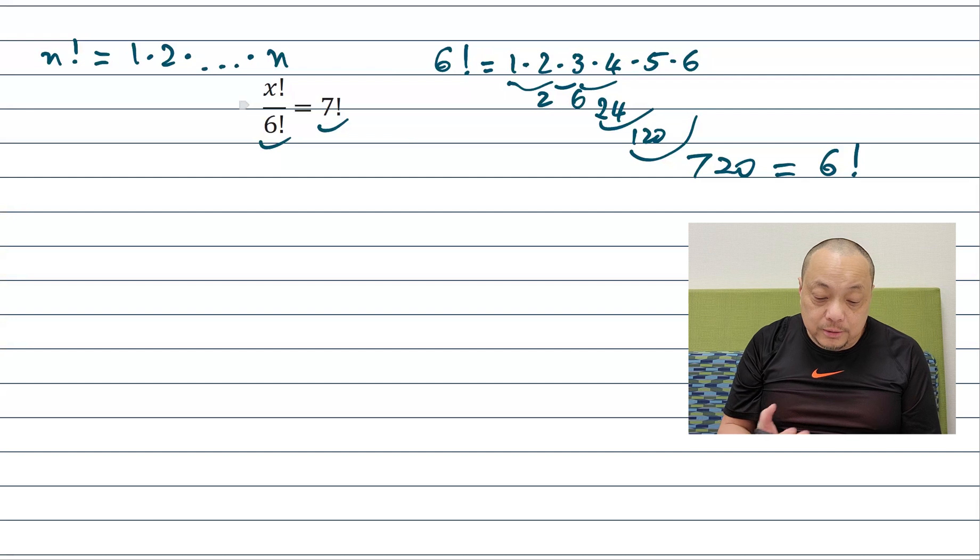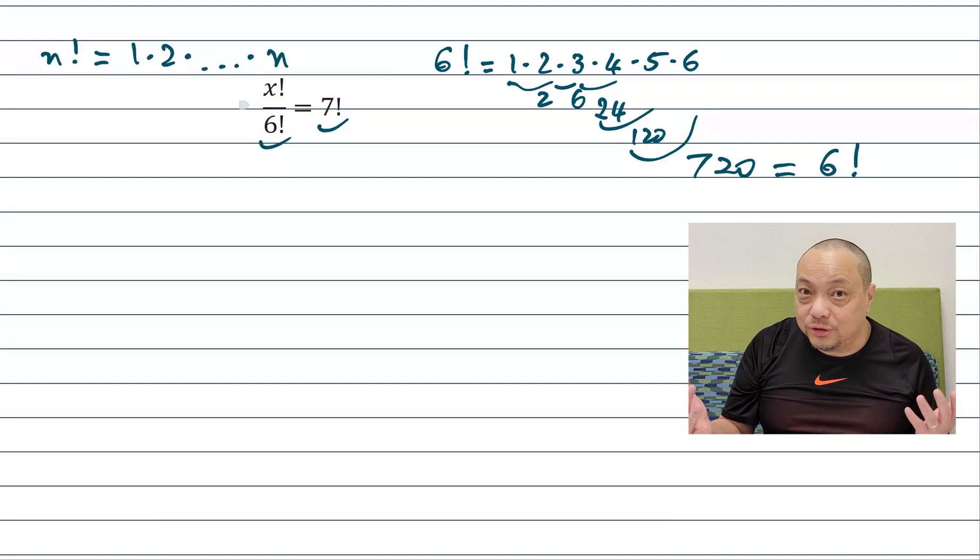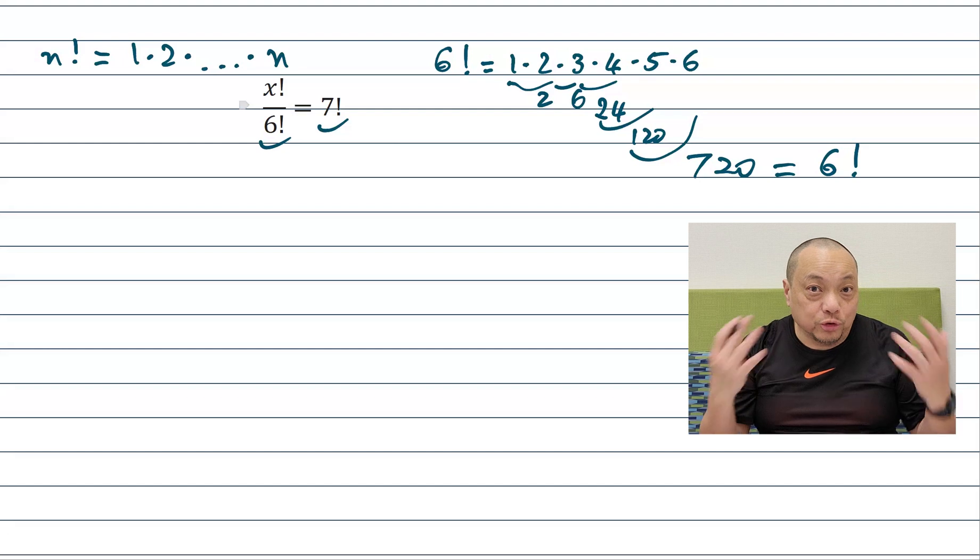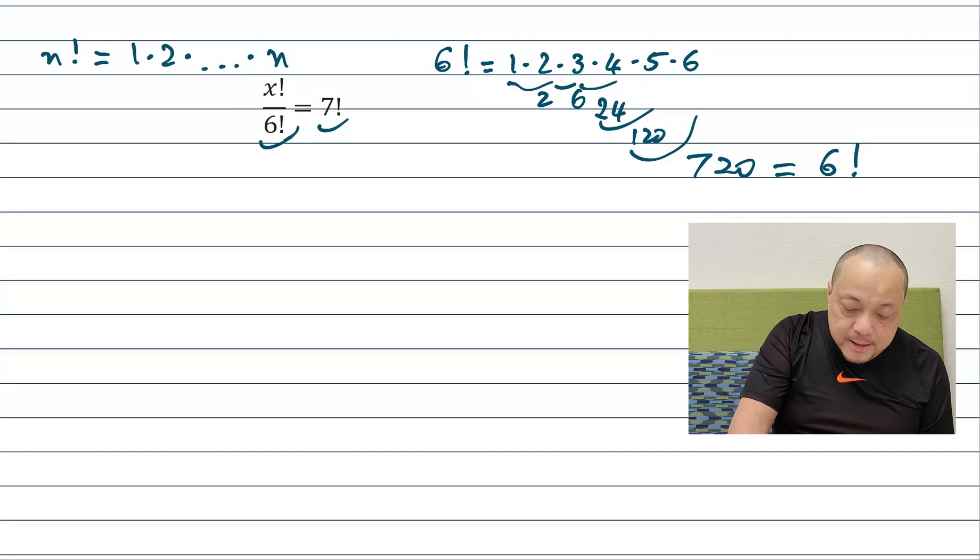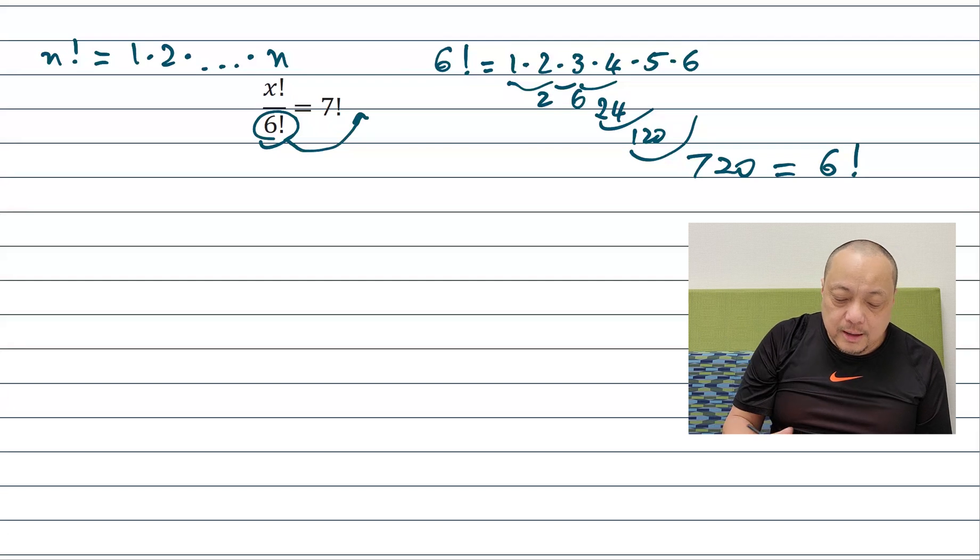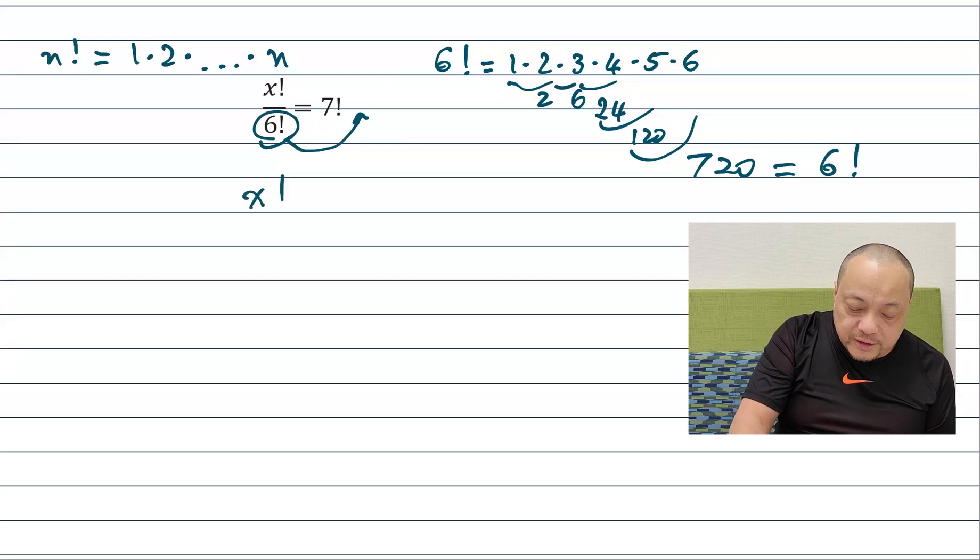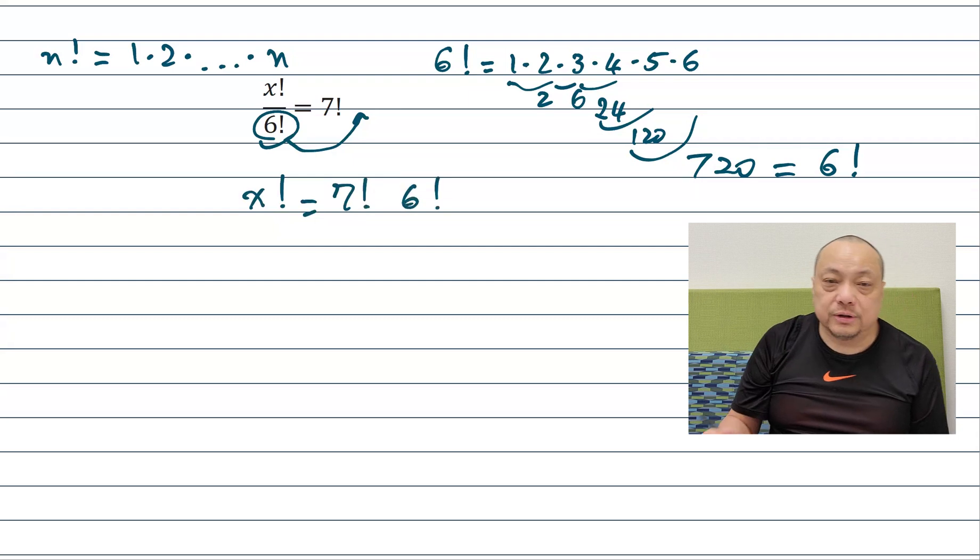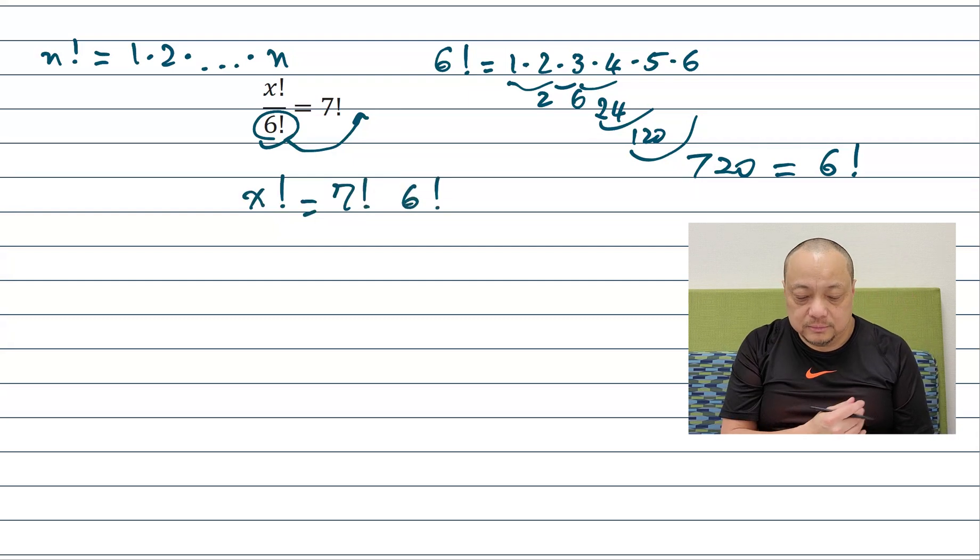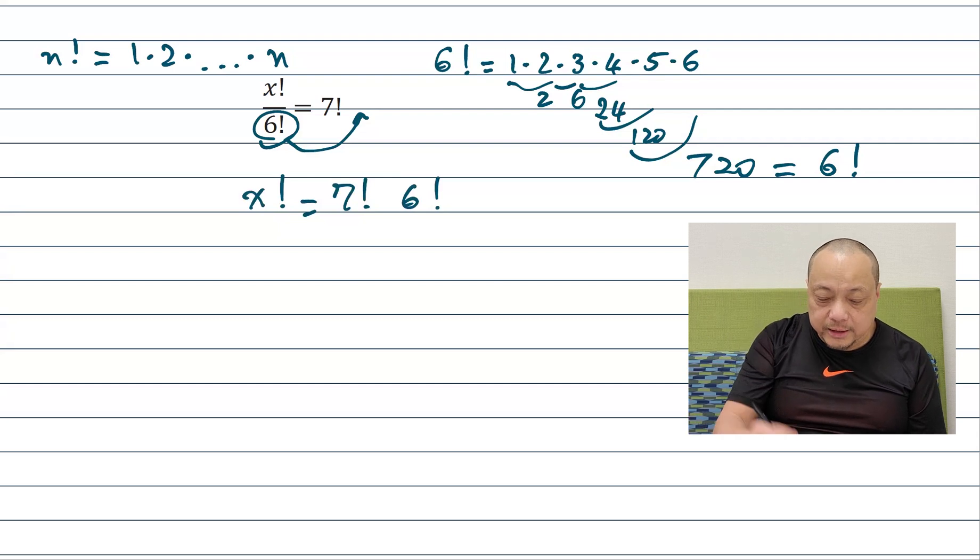All right so 6 factorial, 7 factorial is some other number bigger than that. You may say well how about if we multiply both sides by 6 factorial. It's just a number right. So we can multiply both sides by it. And then this factorial will just go over here and we get x factorial is equal to 7 factorial times 6 factorial. Is that the end?